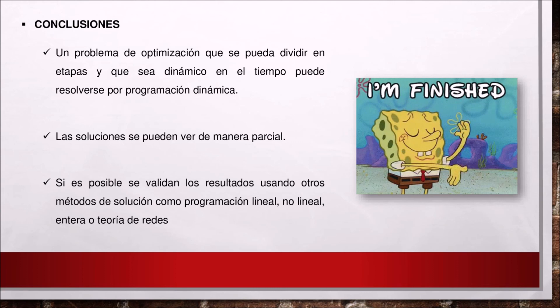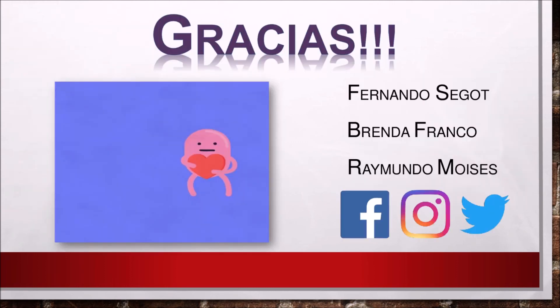Conclusiones. Un problema de optimización que se puede dividir en etapas y que sea dinámico en el tiempo puede resolverse por programación dinámica. La solución se puede ver de manera parcial. Si es posible, se validan los resultados usando otros métodos de solución como programación lineal, no lineal, entera o teoría de redes. Eso es todo por nuestra parte amigos, espero les haya gustado y les haya servido.